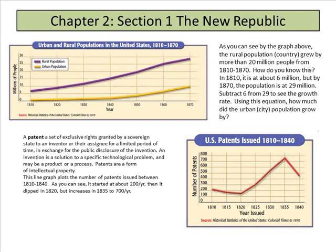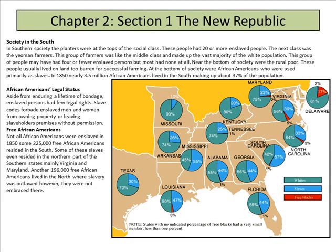During this time of invention, many patents were issued. A patent is a set of exclusive rights granted by a sovereign state to an inventor or their assignee — you've probably seen this on Shark Tank. When they say 'patent pending,' that means they're waiting for the patent to come through.